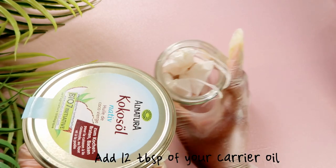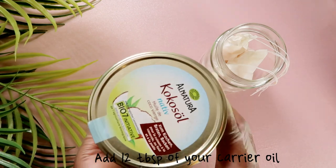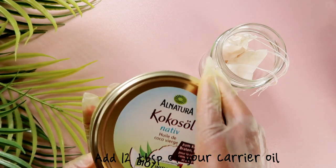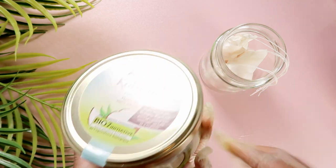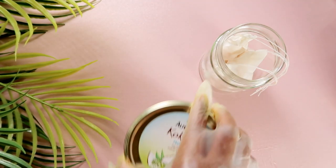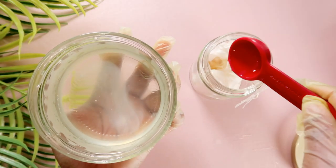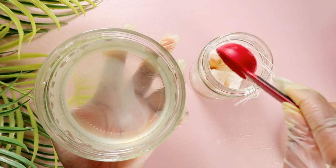For the next step, I'm adding in 12 tablespoons of my coconut oil, or you can add in any other oil of your choice. I'm adding 12 tablespoons of coconut oil into the container containing the turmeric.